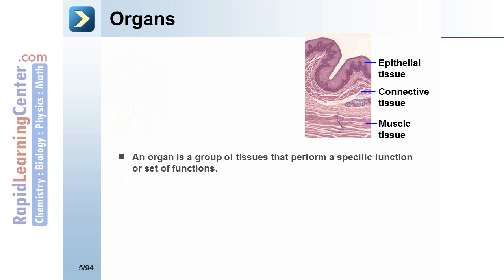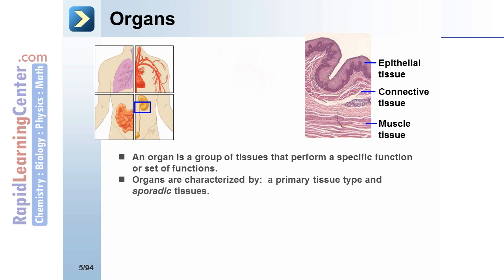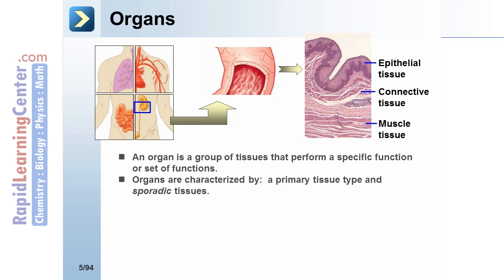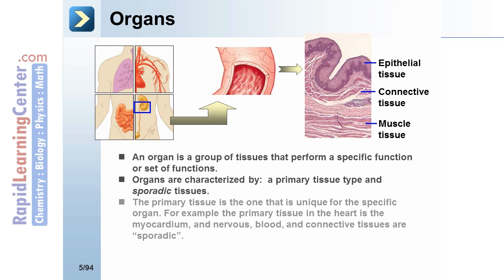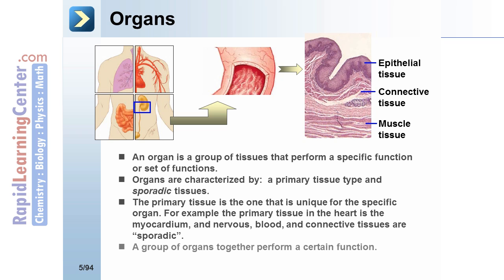An organ is a group of tissues that perform a specific function or set of functions. Organs are characterized by a primary tissue type and sporadic tissues. The primary tissue is the one that is unique to the specific organ — for example, the primary tissue in the heart is myocardium, while nervous, blood, and connective tissues are sporadic in the heart.